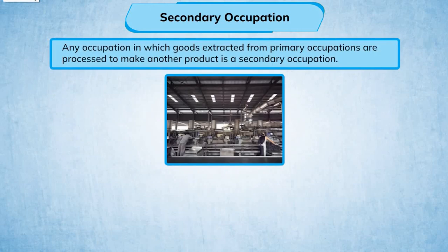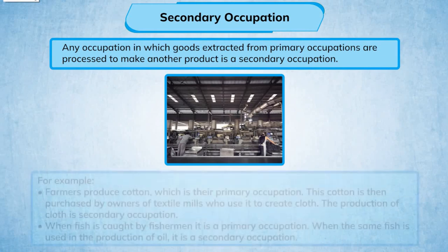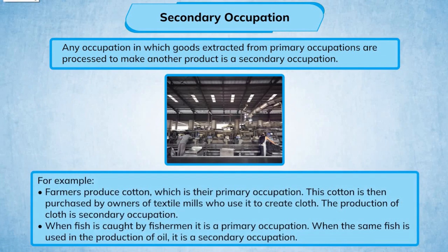Secondary occupation: Any occupation in which goods extracted from primary occupations are processed to make another product is a secondary occupation. For example, farmers produce cotton, which is their primary occupation. The cotton is then purchased by owners of textile mills who use it to create cloth. The production of cloth is a secondary occupation.